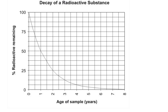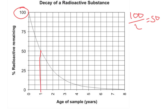A sensible way of working out the half-life of a substance is to choose a number on the y-axis that's easily divisible by two — for example, a hundred. A hundred divided by two is fifty, so we're looking for the time it takes to come down to fifty. Here's fifty, so our half-life goes from here to here.